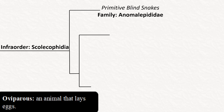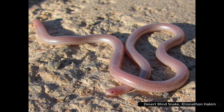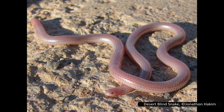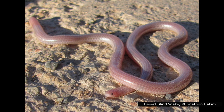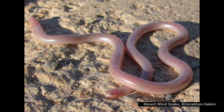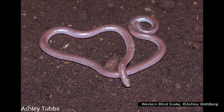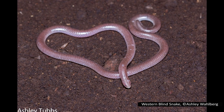The next family is Leptotyphlopidae, more commonly known as the slender blind snakes or the thread snakes. Like the dawn snakes, most are small, being less than 30 centimetres long, with the exception of one or two larger species. The big-scaled blind snake can reach lengths of up to 70 centimetres or 27 inches, while this group also contains the smallest known snake in the world — the Barbados thread snake, at around 10 centimetres or four inches long. They are widespread, found in parts of Africa, Asia, and North and South America, and eat adults, eggs, and larvae of termites and ants.